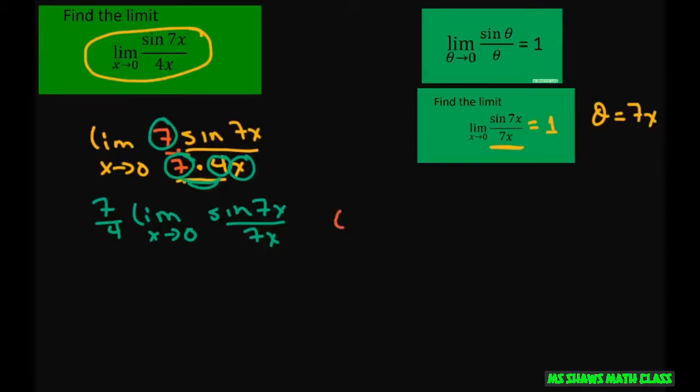If I let theta equal 7x, like we did here, we know this equals 1. So we have 7 fourths times 1, and the answer is 7 fourths.